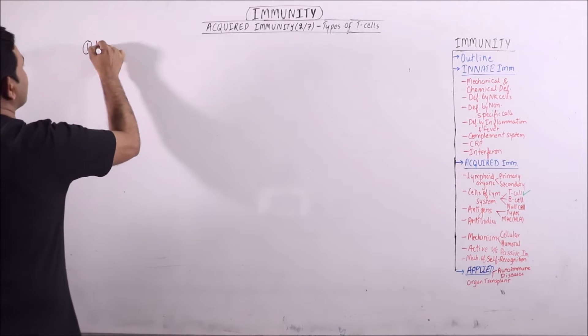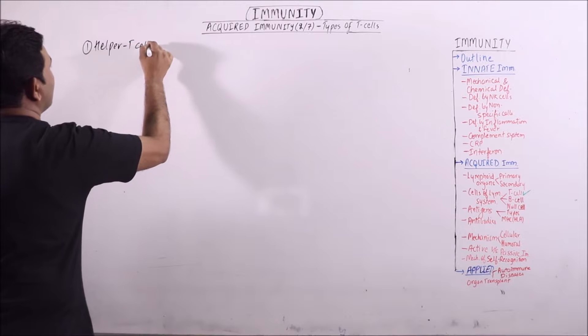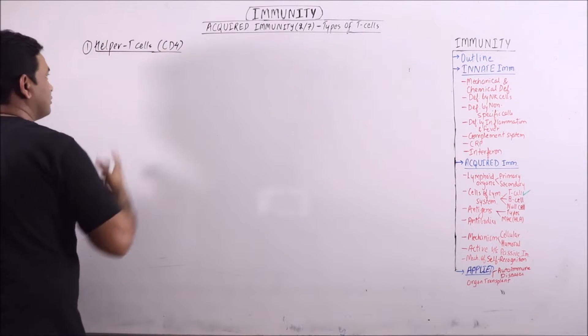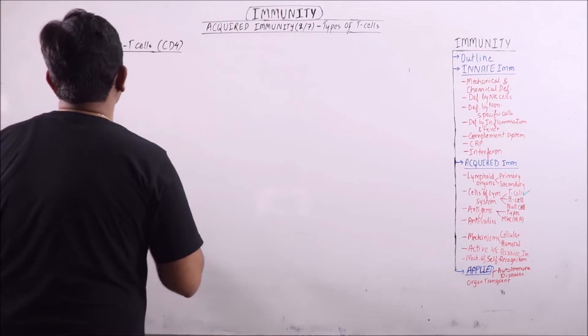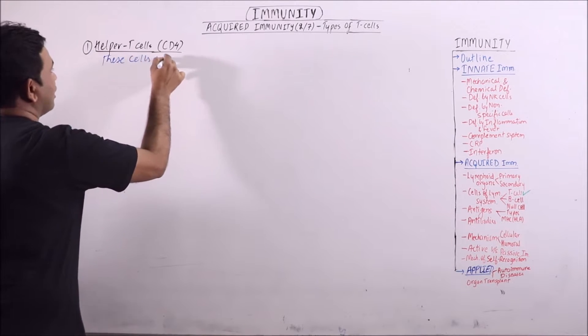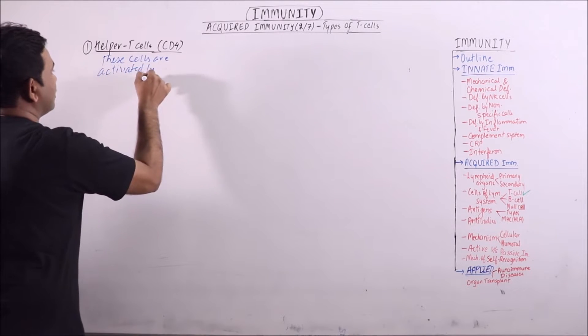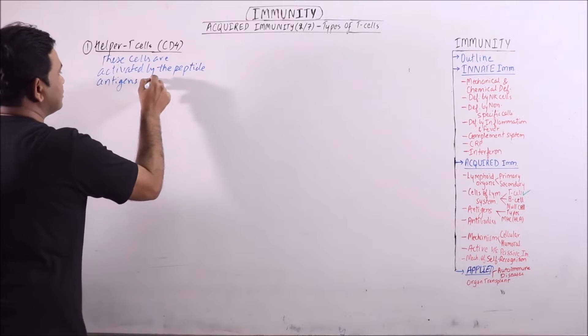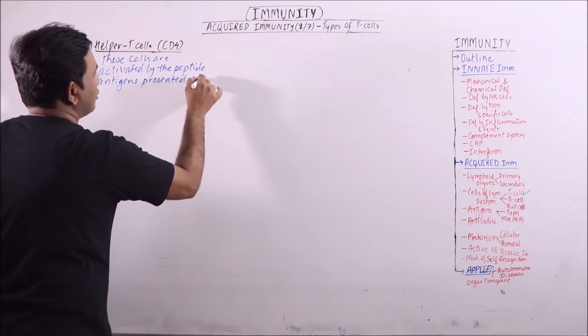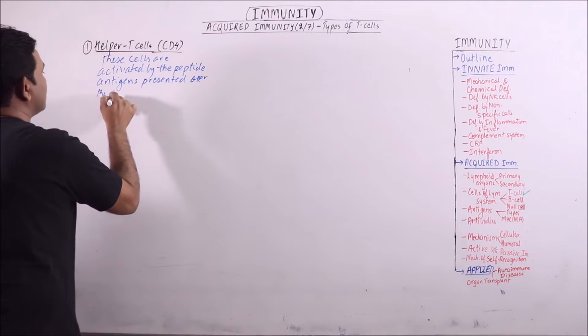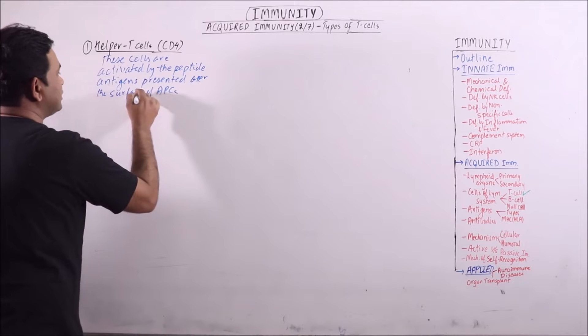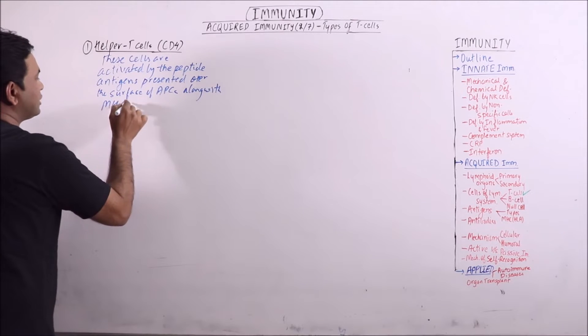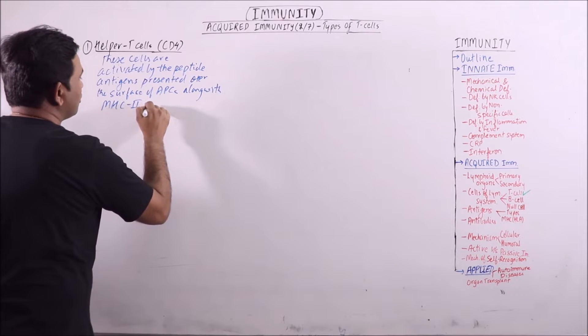First one is helper T-cells. These are also known as CD4 cells or T4 cells. These cells are activated by the peptide antigens presented over the surface of APCs along with MHC class II, that is major histocompatibility class II molecules.